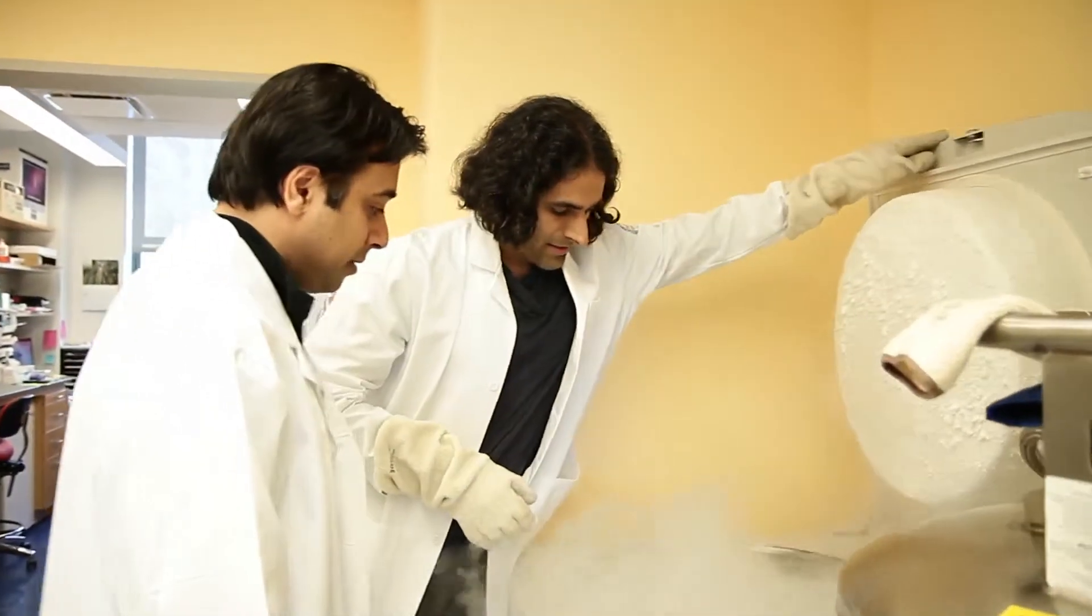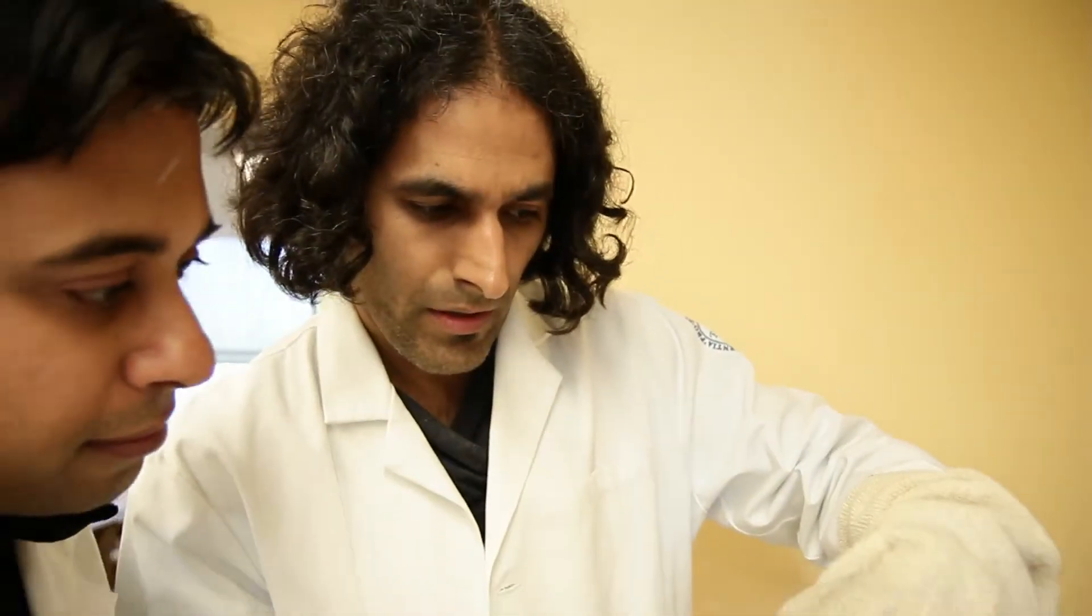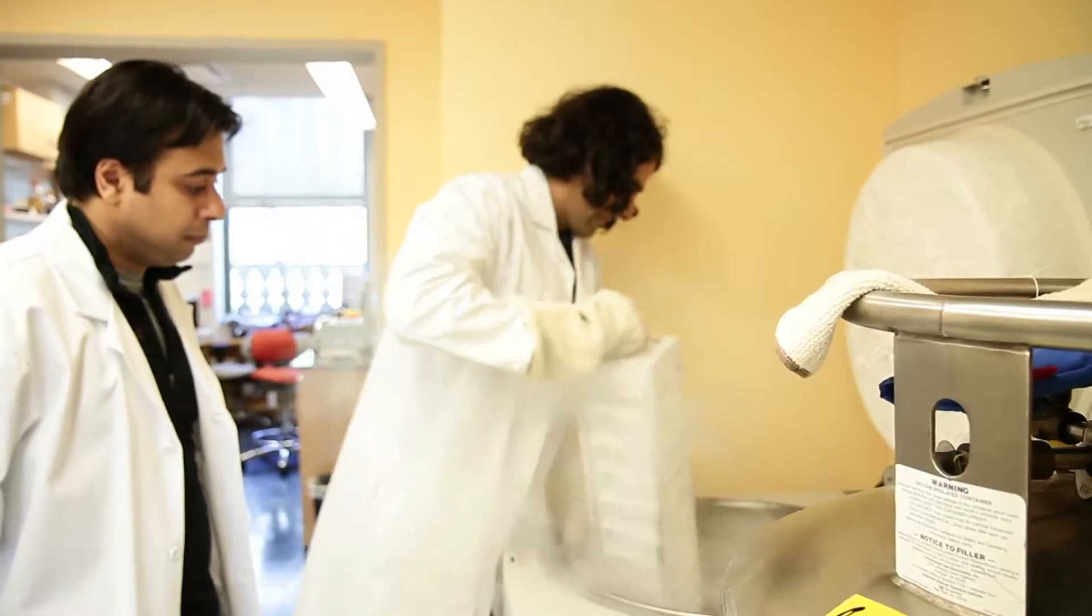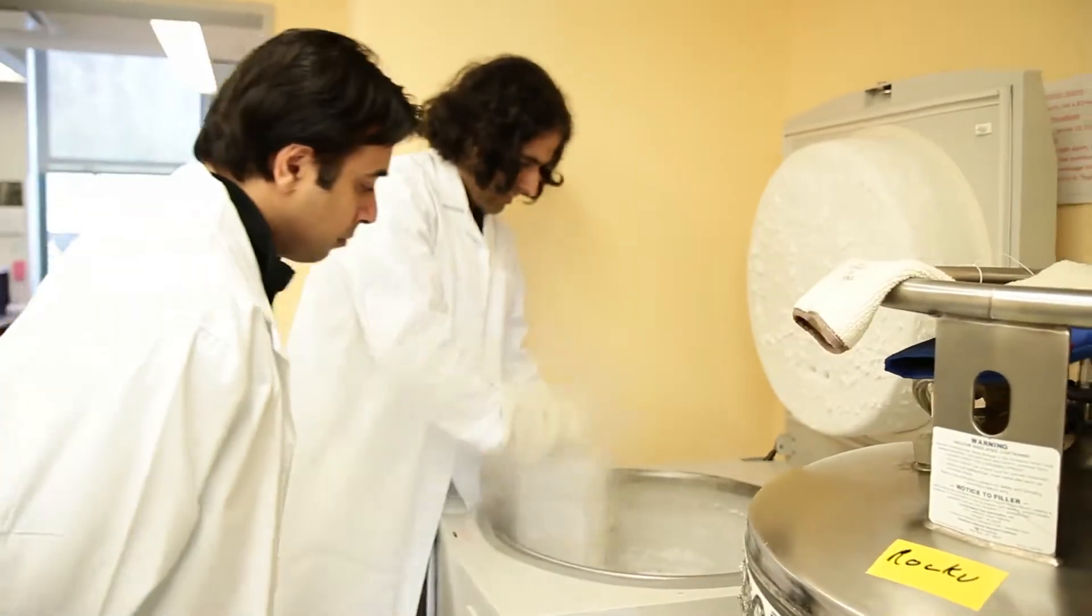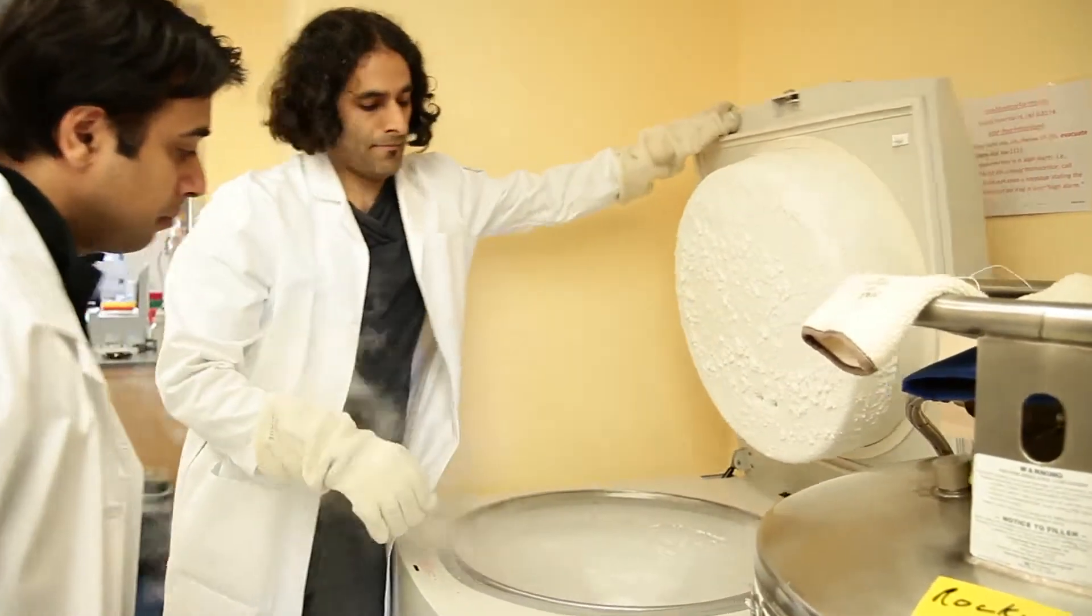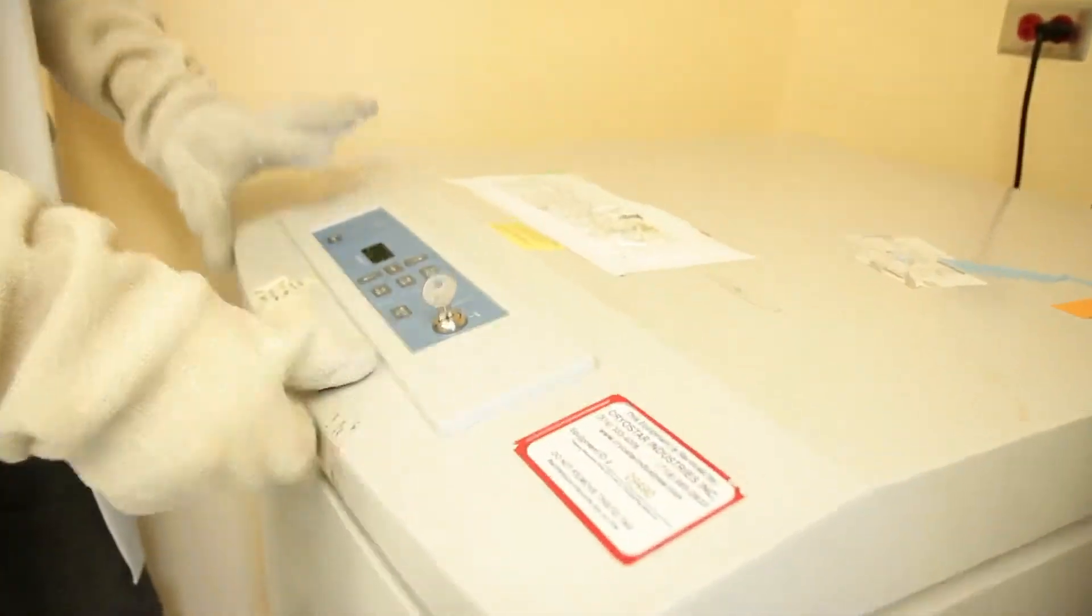What tRNAs do is they bring amino acids together to form a protein. Scientists have found that some of the tRNAs, these adapter molecules, are broken up into pieces. These pieces are actually doing important things in the cell. They're not just junk. But how those pieces work are poorly understood.